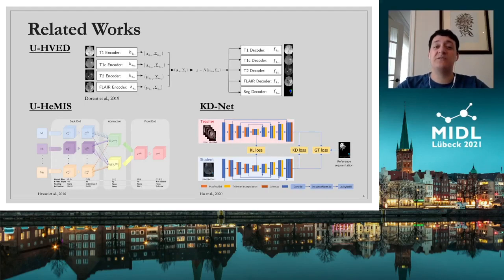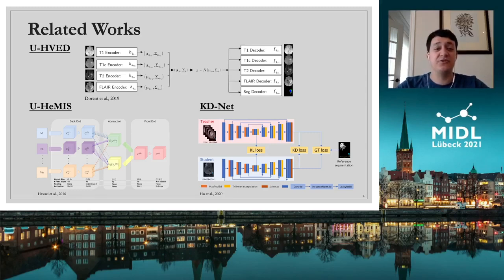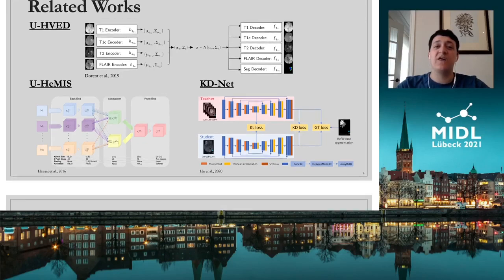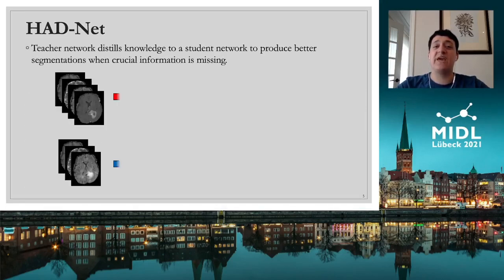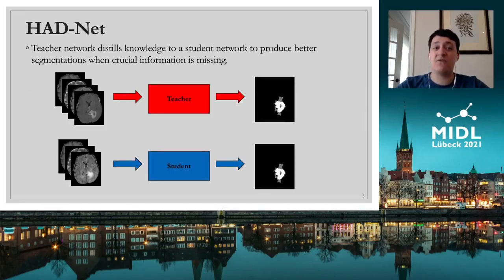For example, UHEMIS and UHVD were developed to segment tumor subtissues given any combination of MR sequences. Another example is KDNet, a knowledge distillation network developed to segment brain tumors using only a single MR sequence. While these methods have shown some success, their performance in segmenting enhancing tumors degrades substantially when T1C is missing, likely because they are incapable of coping with the large domain shift that arises when such key sequences are missing during inference. Therefore, our approach was to focus on developing a knowledge distillation technique powerful enough to bridge this gap.